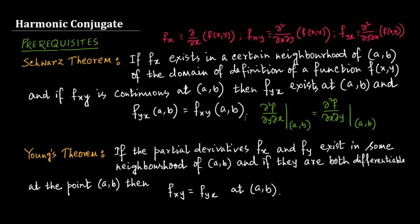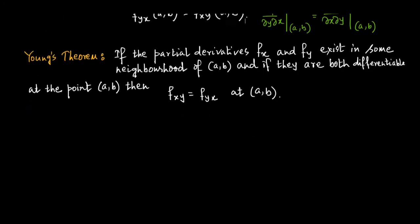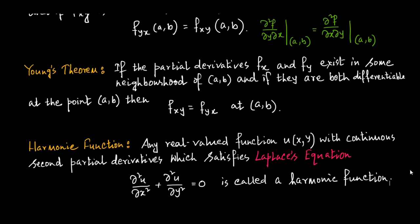Now let us see what is the definition of a harmonic function. Any real-valued function u of two variables x, y with continuous second partial derivatives which satisfies Laplace's equation — that is, del²u / del x² plus del²u / del y² equals 0 — is called a harmonic function. This can alternatively be written as u_xx plus u_yy equals 0.